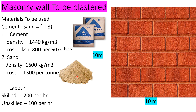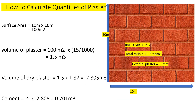The masonry wall is to be plastered using cement and sand at a ratio of 1:3. The density of cement is 1440 kg per cubic meter, and the cost of a 50 kg bag is 800 shillings. The density of sand is 1600 kg per cubic meter, and the cost of sand per ton is 1600 shillings. Skilled labor costs 200 shillings per hour and unskilled labor costs 100 shillings per hour. The wall is 10 meters in length and 10 meters in height.